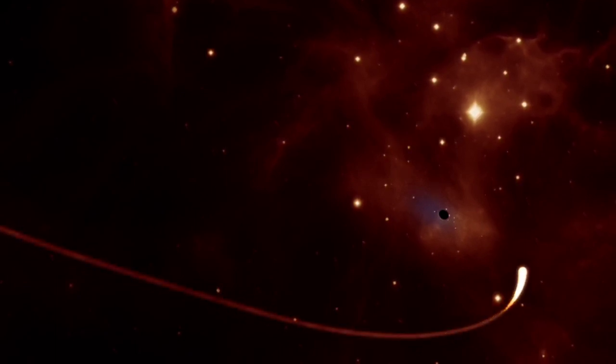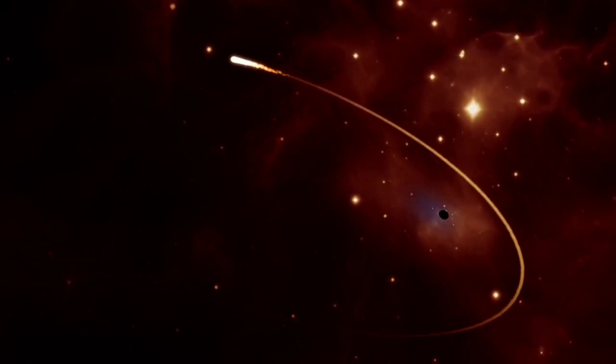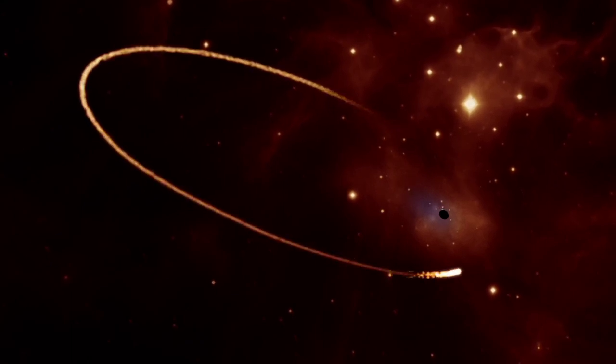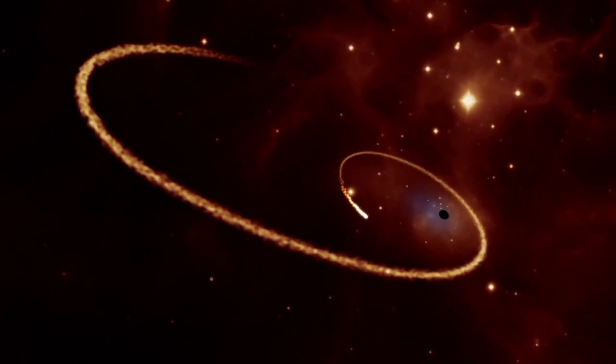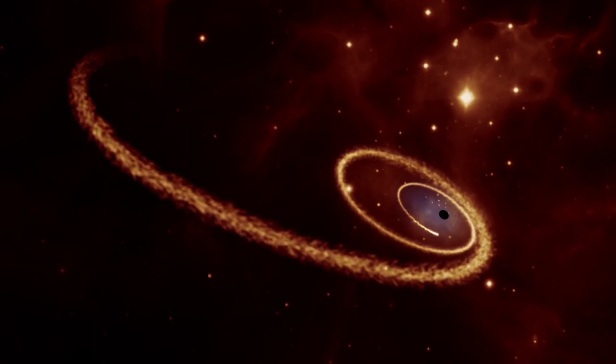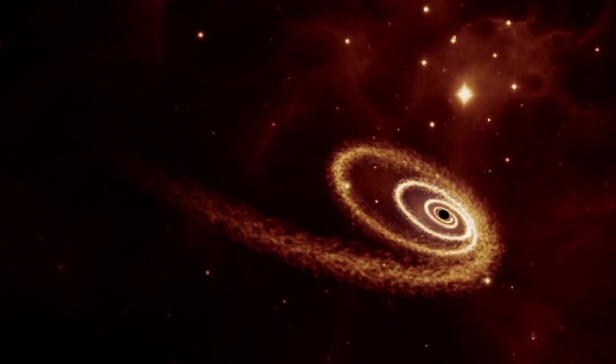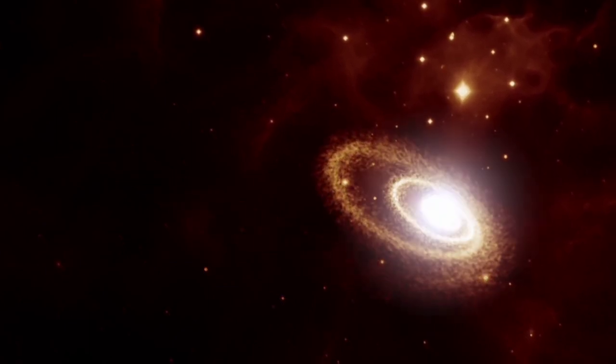Matter that falls onto a black hole can form an external accretion disc heated by friction, forming quasars. Stars passing too close to a supermassive black hole can be shredded into streamers that shine very brightly before being swallowed.